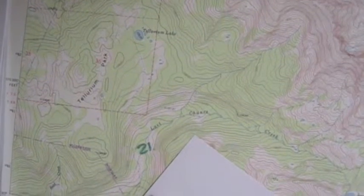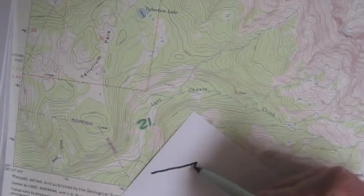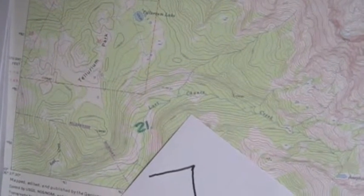So if we did a cross section of Last Chance Creek, it would come down pretty straight on one side, then you'd be in the creek, and it'd be pretty steep up the other side. It doesn't really have a flat bottom.